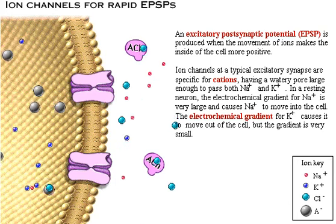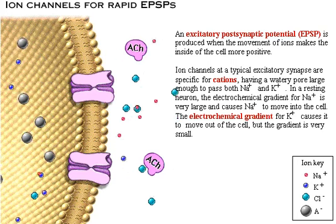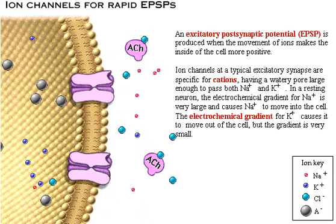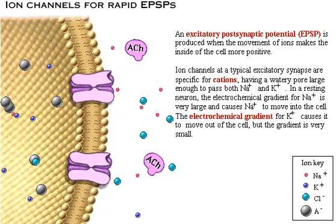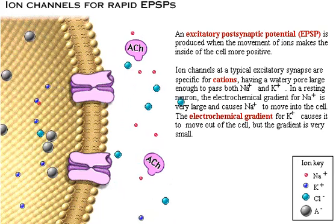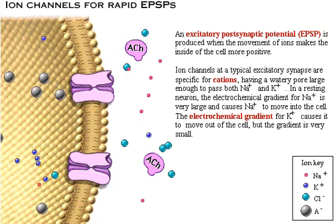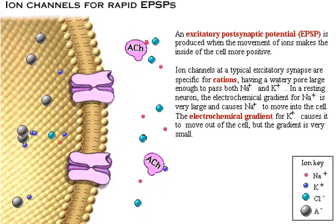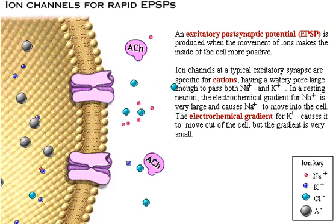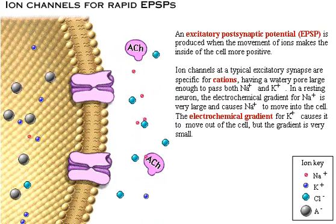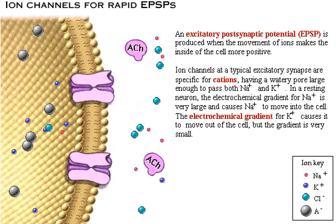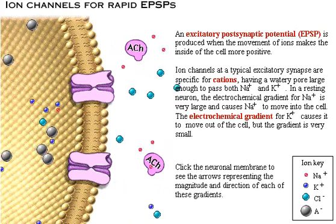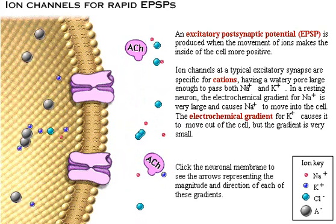Ion channels at a typical excitatory synapse are specific for cations, having a watery pore large enough to pass both sodium and potassium. In a resting neuron, the electrochemical gradient for sodium is very large and causes sodium to move into the cell. The electrochemical gradient for potassium causes it to move out of the cell, but that gradient is very small.